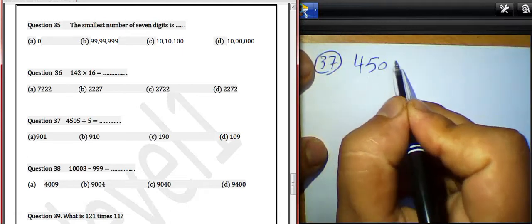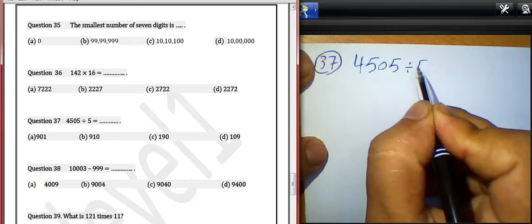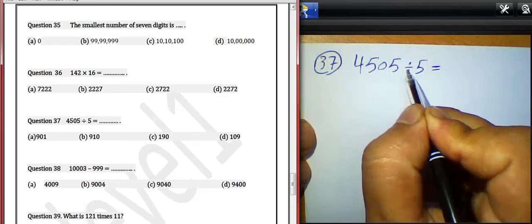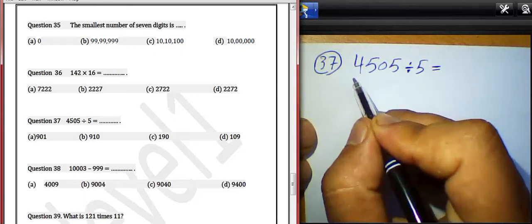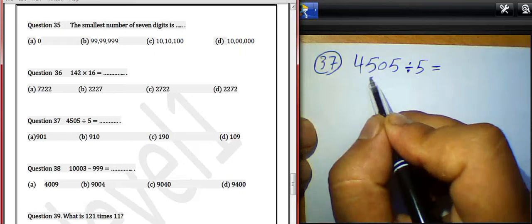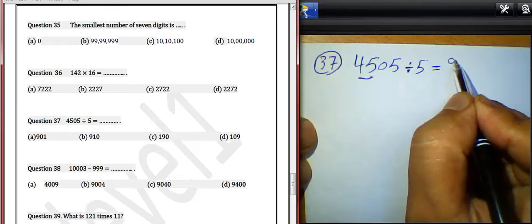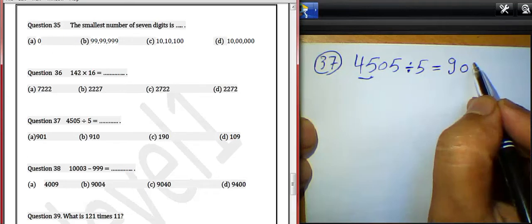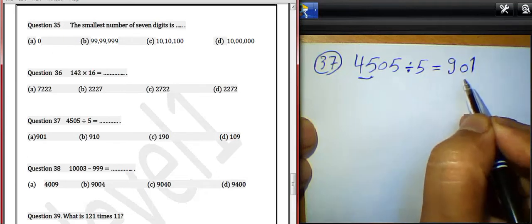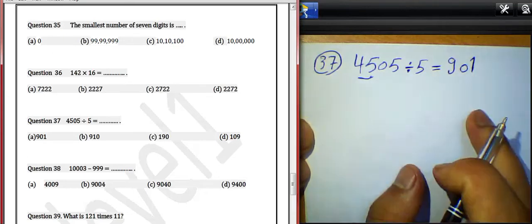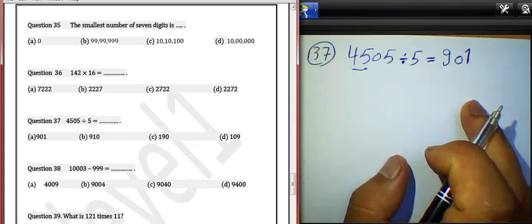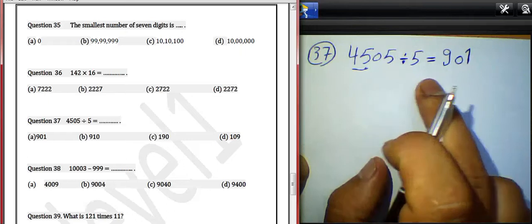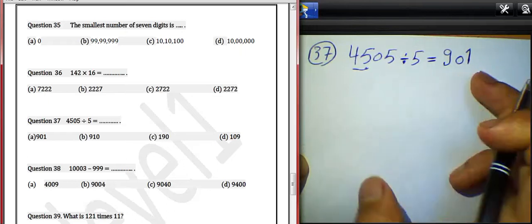Question 37: 4,505 divided by 5 equals what? We must divide from the left-hand side. 4 divided by 5 — we can't do it. 45 divided by 5 equals 9. 0 divided by 5 equals 0. 5 divided by 5 equals 1. The result will be 901.